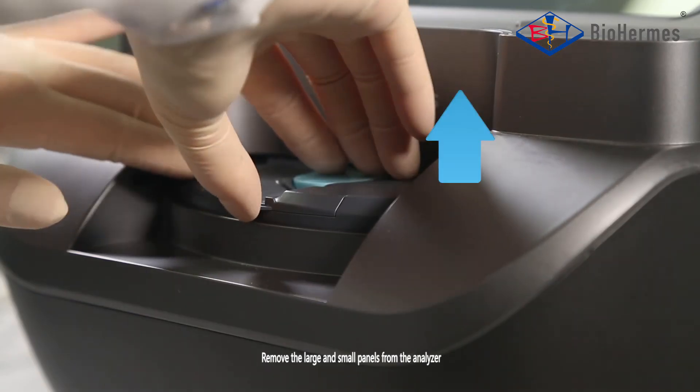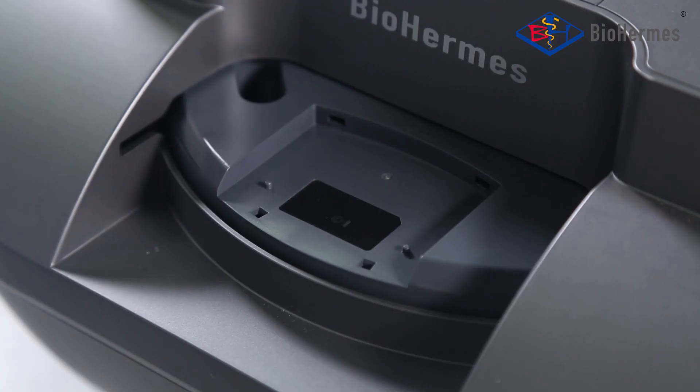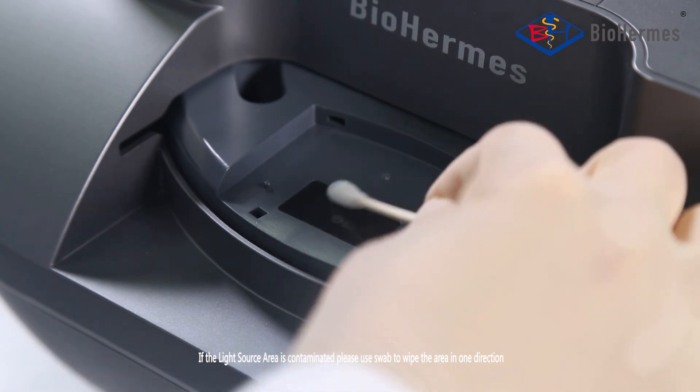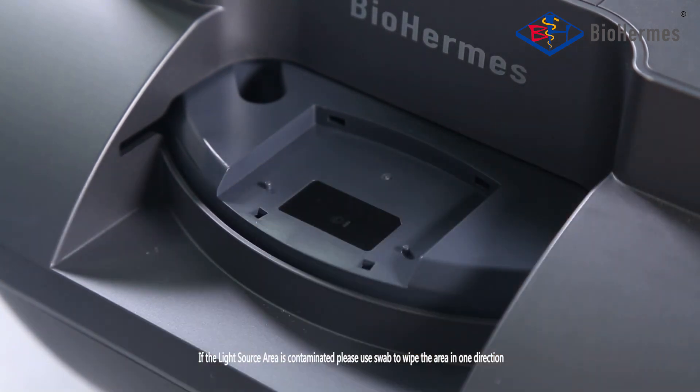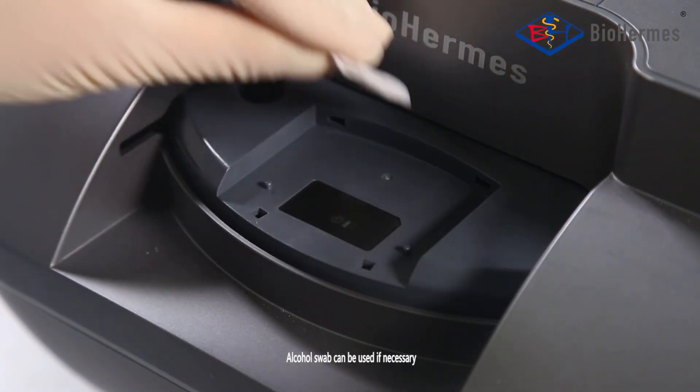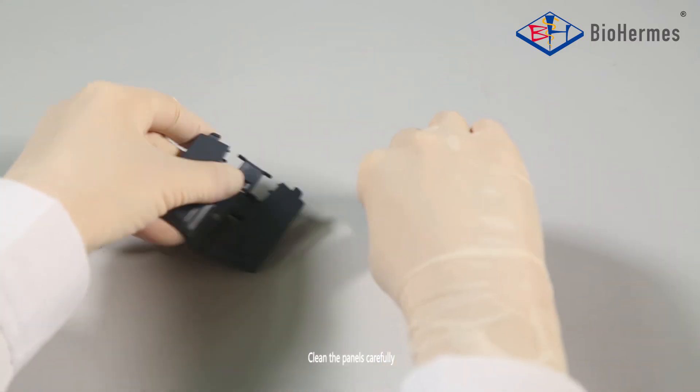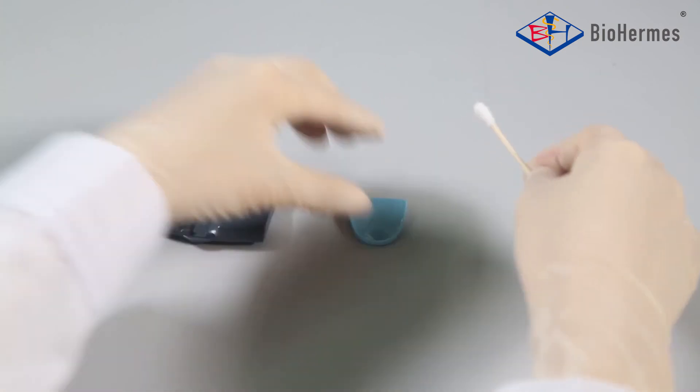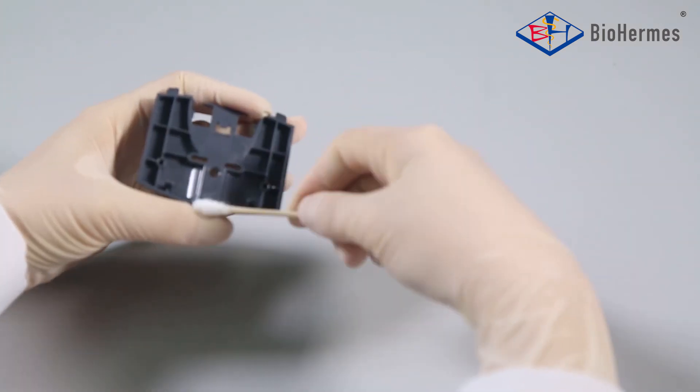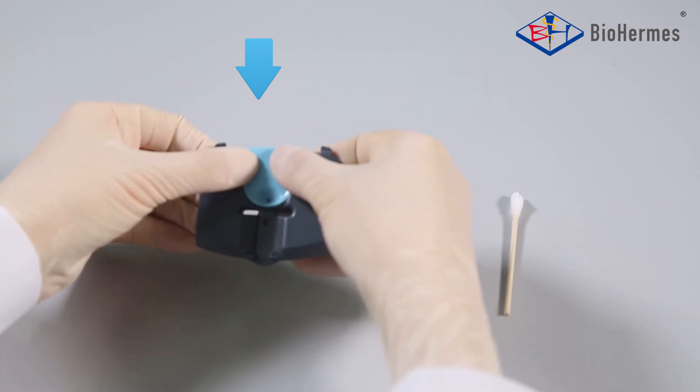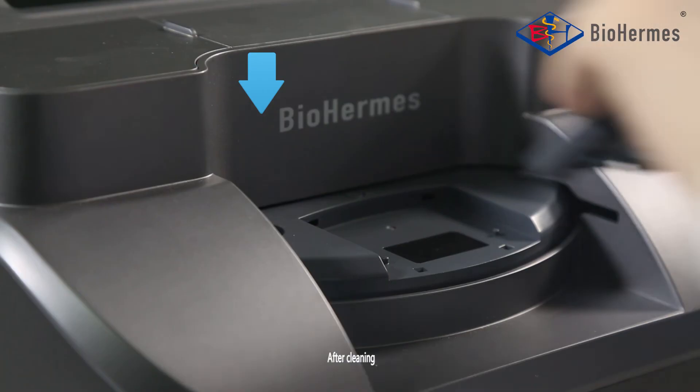Remove the large and small panels from the analyzer. If the light source area is contaminated, please use a swab to wipe the area in one direction. Alcohol swab can be used if necessary. Clean the panels carefully and dry them after cleaning.